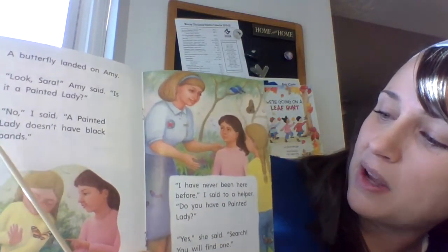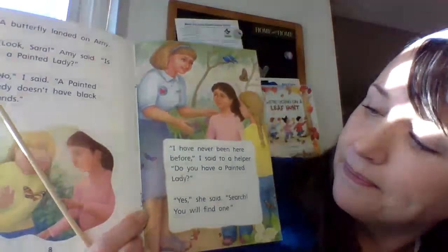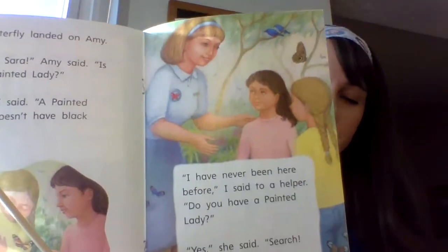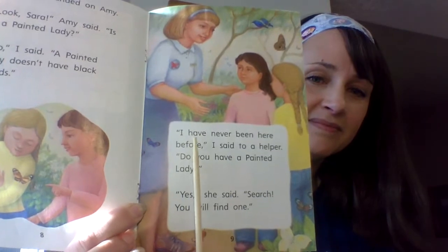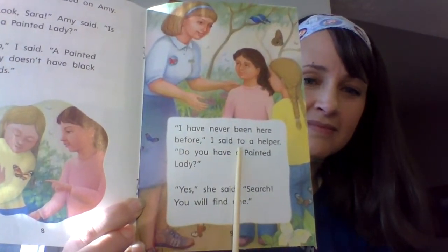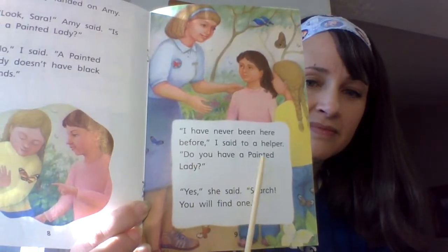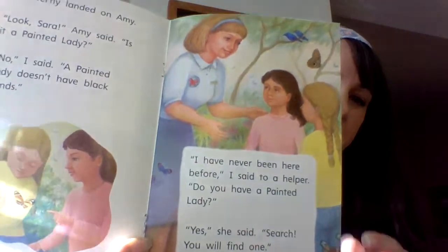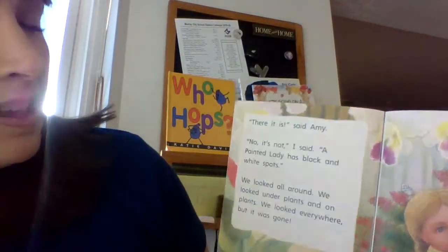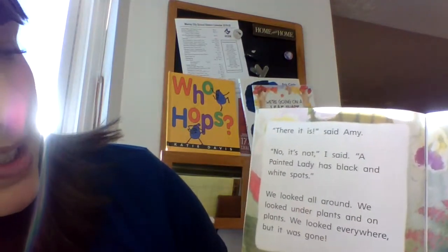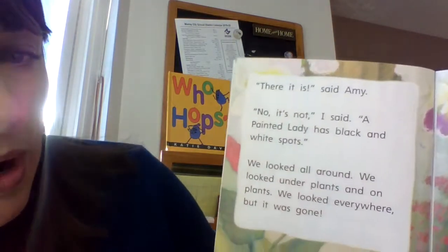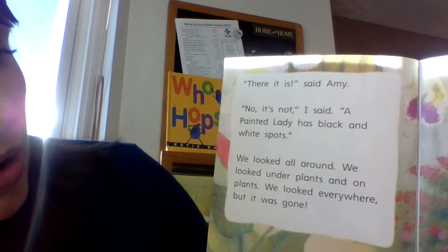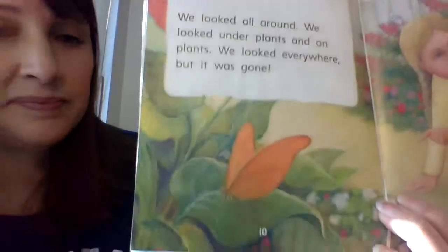I've never been here before, I said to a helper. Do you have a painted lady? Yes, she said. You will find one. Your turn. There it is, said Amy. No, it's not, I said. A painted lady has black and white spots. We looked all around. We looked under plants and on plants. We looked everywhere, but it was gone.